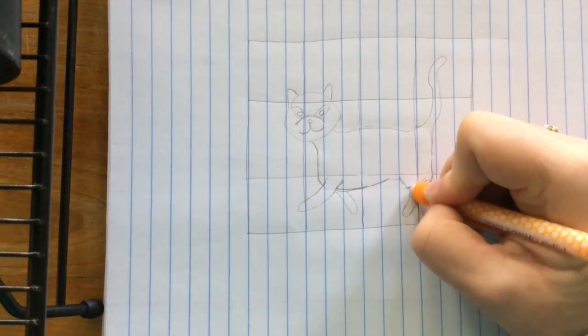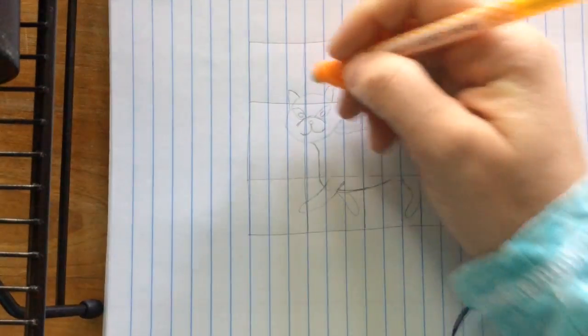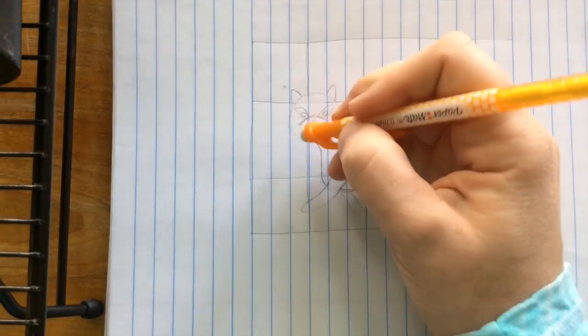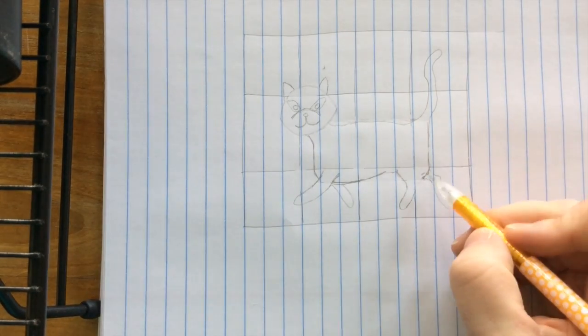Then go back and erase all your lines out. Best you can. Doesn't have to be perfect. And then you can color your cat however you'd like.